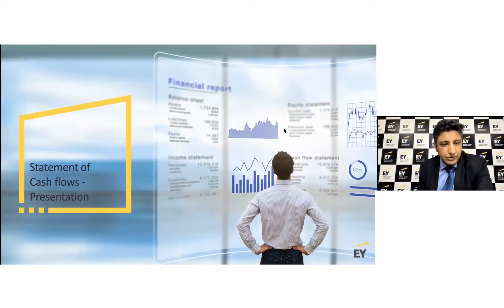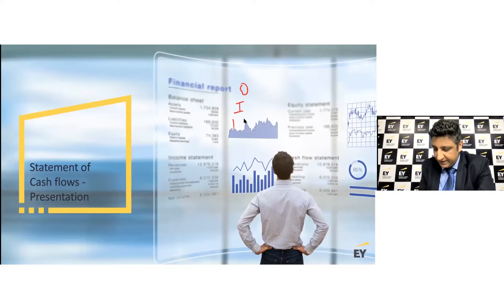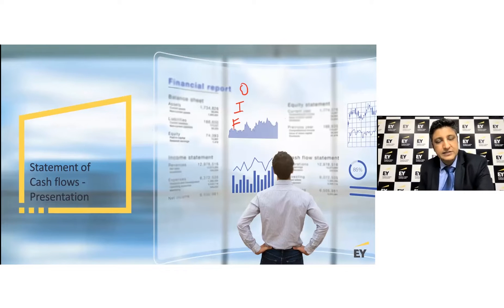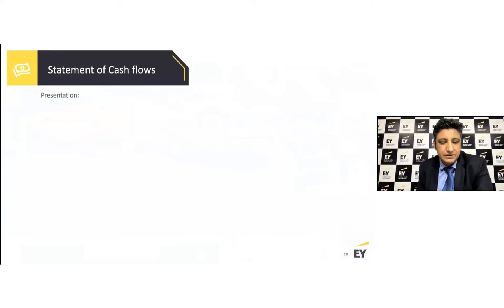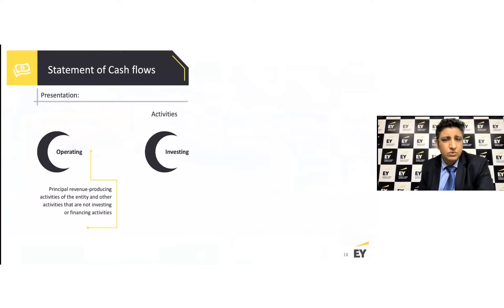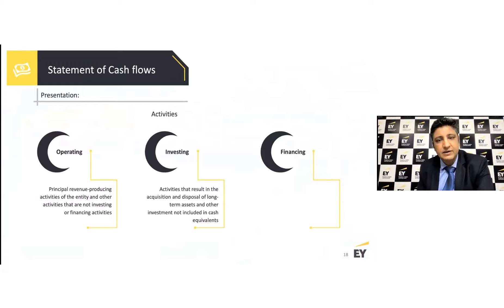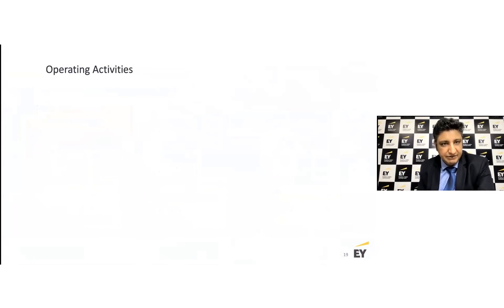We would now like to spend some time talking about the presentations within the statement of cash flows. We've already talked about the various activities — operating, investing, and financing — as part of our activities to be reported under the statement of cash flows. This section takes up a detailed discussion around these aspects in terms of examples of operating, investing, and financing activities that we must be aware of.